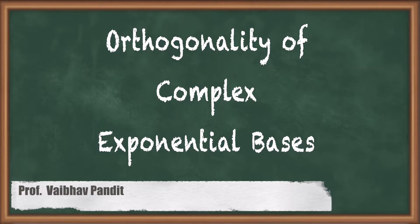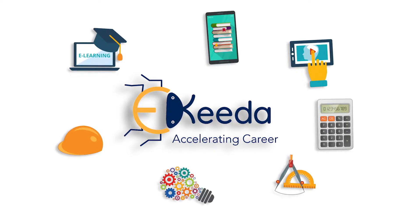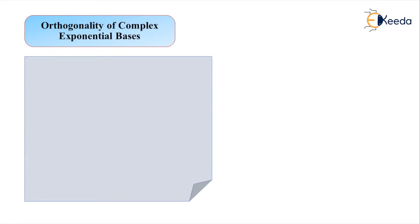This is the topic: Orthogonality of Complex Exponential Basis. In the previous video, we saw the complex Fourier series, where f(t) is represented as c₀ + c₁e^(jωt) + c₋₁e^(−jωt) and so on, up to cₙe^(jnωt) + c₋ₙe^(−jnωt).